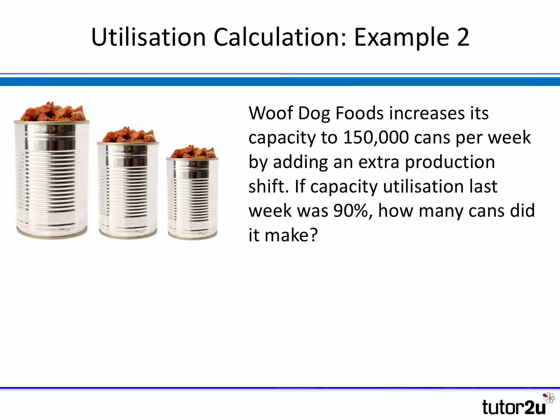Let's change the example slightly. We're still with Woof Dog Foods, but now there's good news: Woof Dog Foods has increased its capacity to 150,000 cans per week by adding an extra production shift. If the capacity utilization last week was 90%, how many cans did it make based on this new capacity?